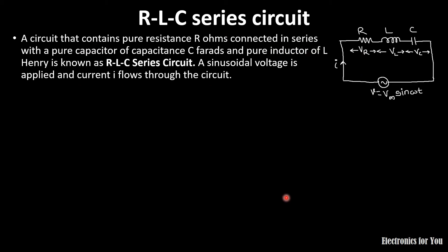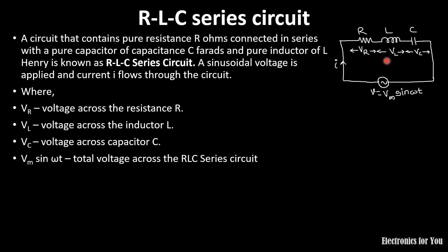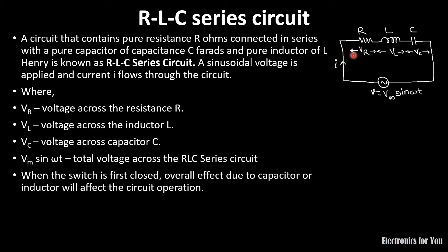Here is our RLC series circuit. The supply voltage v = Vm·sin(ωt) is applied. The voltage across resistance is VR, voltage across the inductor is VL, and voltage across the capacitor is VC. It is a series circuit, so current I flows through the circuit. When the switch is closed, the overall resultant will depend on the impedance values of L and C, so the overall circuit operation will be affected by the values of the inductor and capacitor.